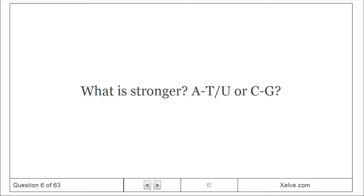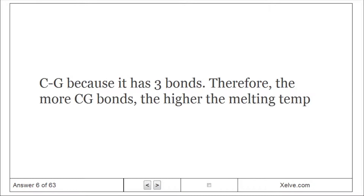Which is a stronger bond, T-U or C-G? C-G, because it has three hydrogen bonds. Therefore, the more C-G bonds present, the higher the melting temperature.